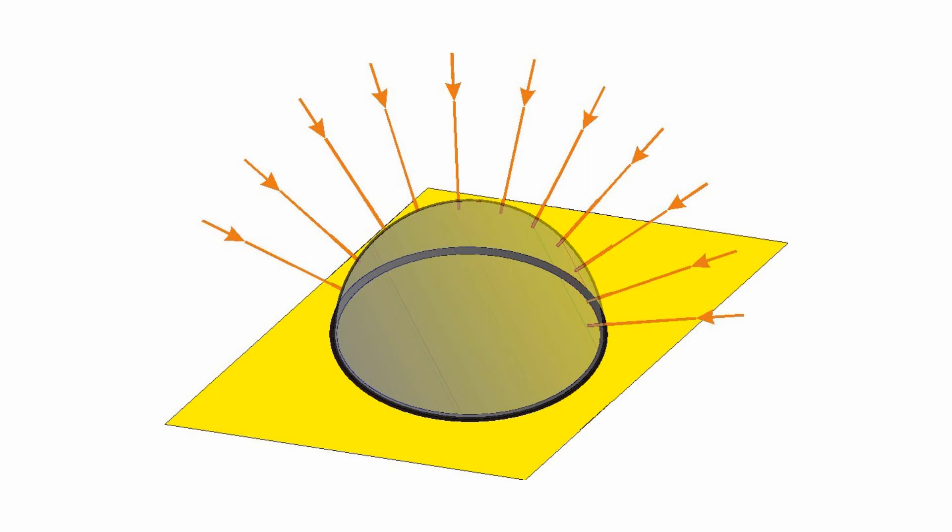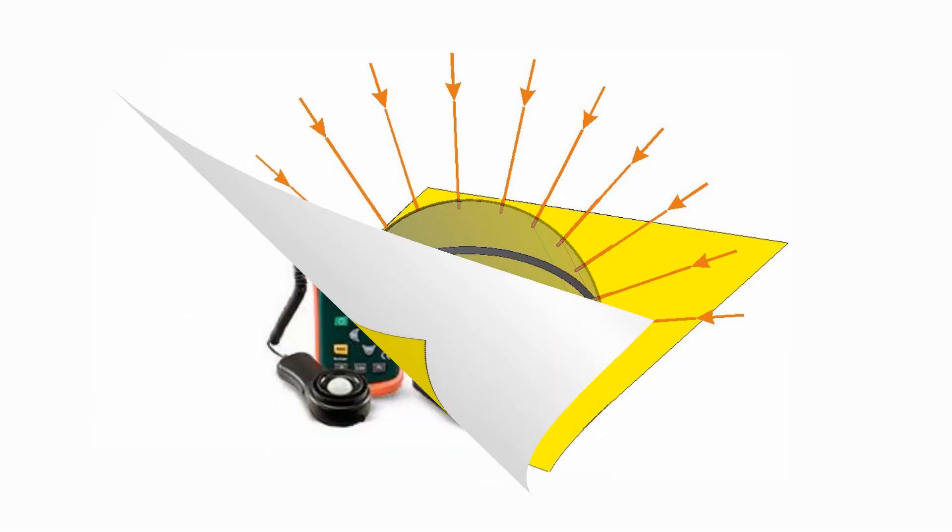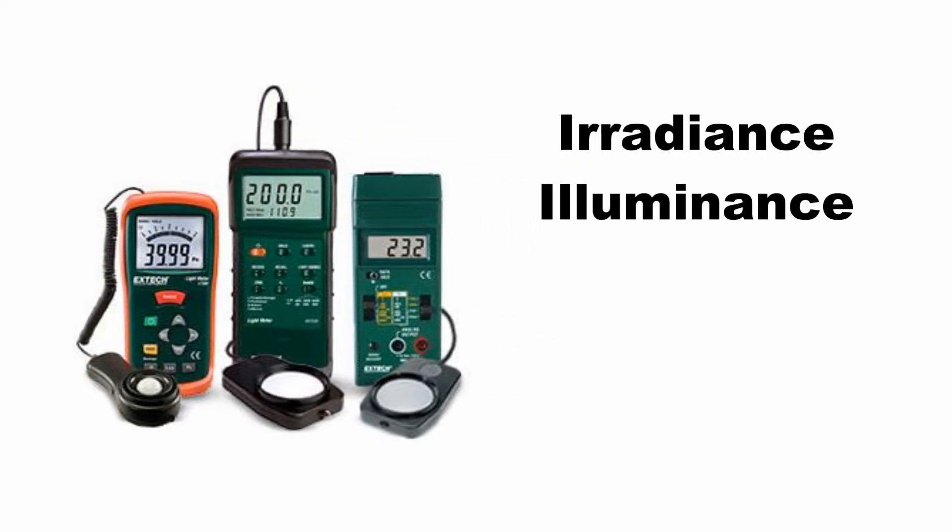There are times when the light energy falling on a surface needs measuring. This is either irradiance for radiometric measurements or illuminance for photometric measurements. The instrument used for measuring irradiance or illuminance is a light meter. The light meter must be selected either for photometric or illuminance or radiometric or irradiance measurements.